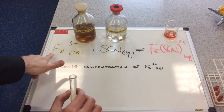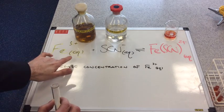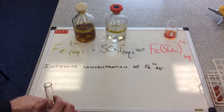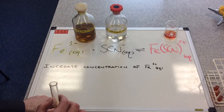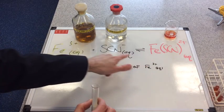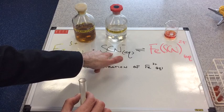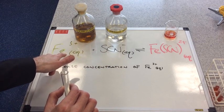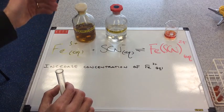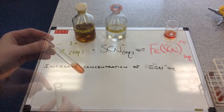So we've increased the concentration of iron 3 plus ions. We've upset the equilibrium. How does the equilibrium respond? It moves this way. So some of the thiocyanate ions react with the iron 3 plus ions that have increased the concentration and the equilibrium moves this way.